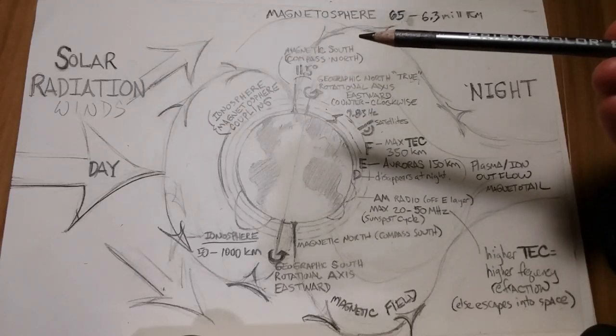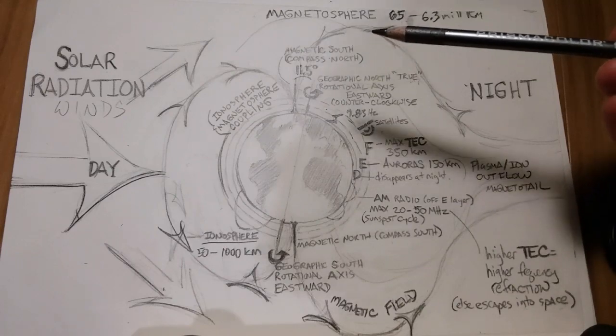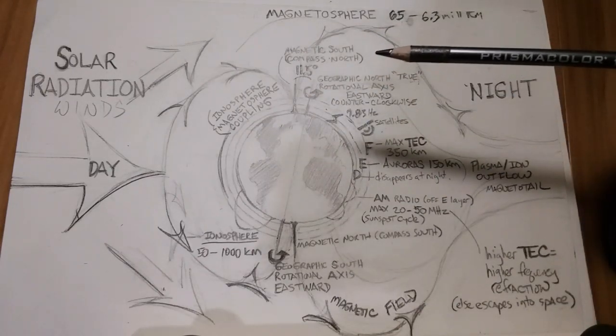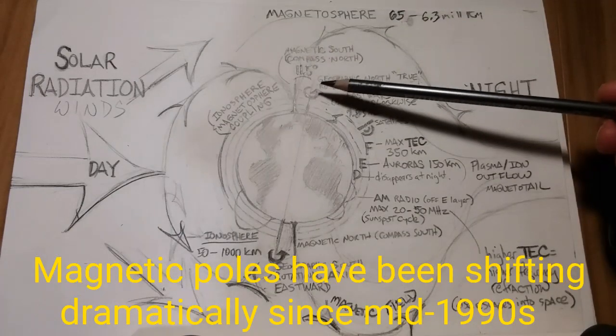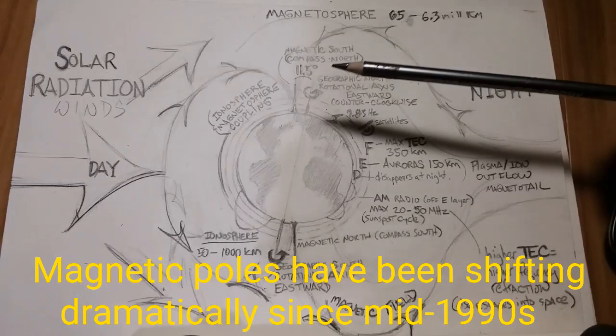And Earth's magnetic poles reverse typically every 200,000 to 300,000 years, although the last time the poles reversed were 780,000 years ago. We're well overdue, guys, for a magnetic shift in the Earth's polarity.